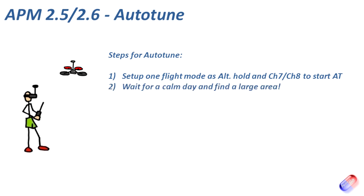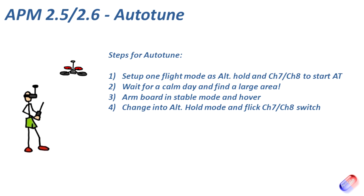Exactly like auto trim, you need a calm day — you don't really want the craft being blown around. It's not as crucial to be absolutely calm as with auto trim, but the craft will wander in the sky as it flicks around and tests responses while changing the PID settings. That wandering can cover quite a bit of ground, but if it gets too far away you can fly it back to the middle of the field, let go of the sticks, and the process will continue. Arm the board in stabilised mode, take it into a hover, get it a good way away from you, up about 20 feet, then flick it into altitude hold mode and then flick that channel 7 or 8 switch.